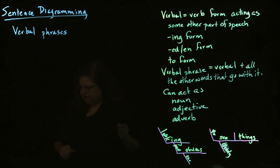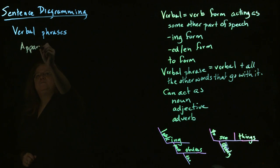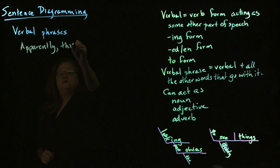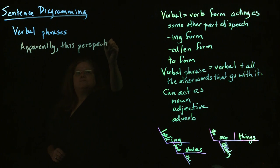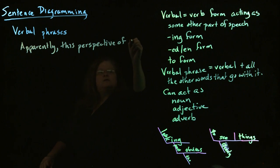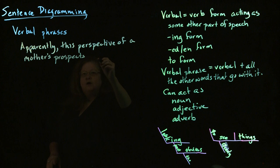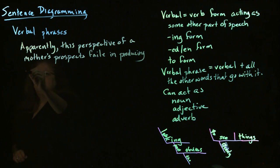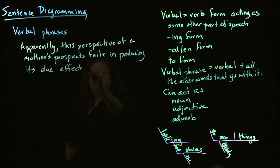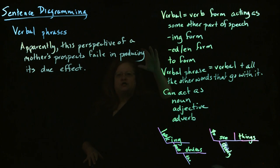So, if we have, apparently, this perspective of a mother's prospects failed in producing its due effect. So, what we want to do here is we look at this sentence, and we have a verbal. Producing is our verbal. It's an ing verb. There are no helping verbs around it.